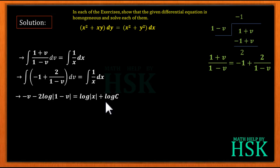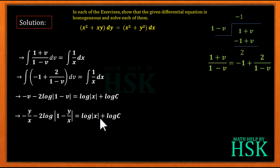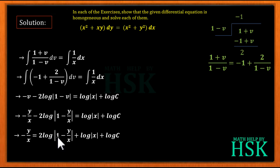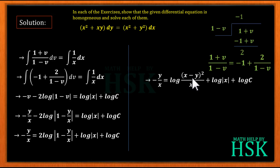Now we back-substitute v = y/x to express the solution in terms of x and y. Replacing v with y/x, we get −y/x − 2·log(1 − y/x) = log x + log c. The term 2·log(1 − y/x) can be written as log((x − y)/x)² = log(x − y)² − log x².